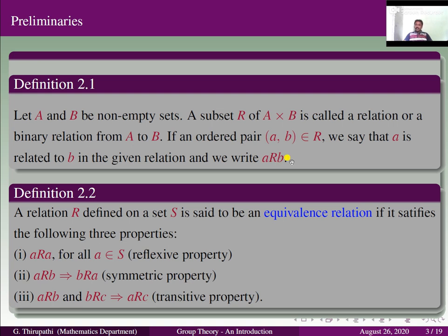When we say that the relation is an equivalence relation, what conditions must it satisfy? A relation R defined on a set S is said to be an equivalence relation if it satisfies three properties. One is the reflexive property: for all A belonging to S, A is related to A. The symmetric property: A related to B implies B related to A. The transitive property: A related to B and B related to C, which gives A related to C.